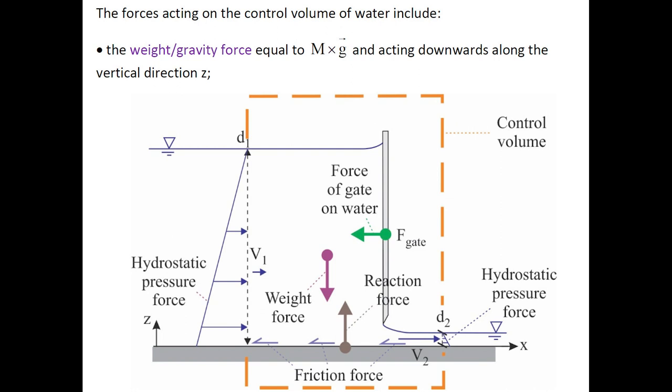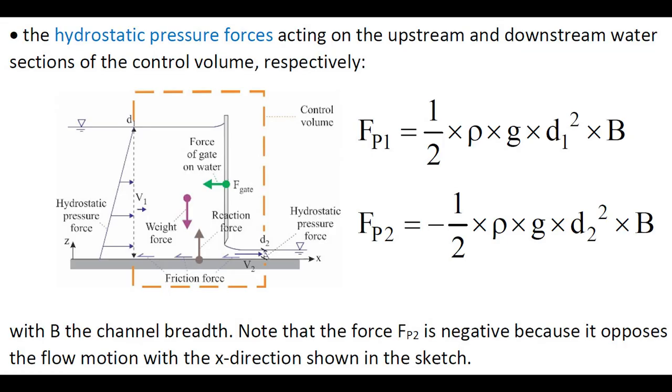The forces acting on the control volume include the weight force or gravity force Mg acting downwards along the vertical z direction. The hydrostatic pressure forces acting on the upstream and downstream water section of the control volume, shown here.